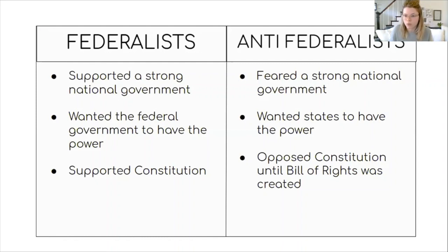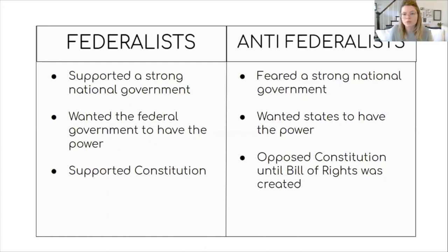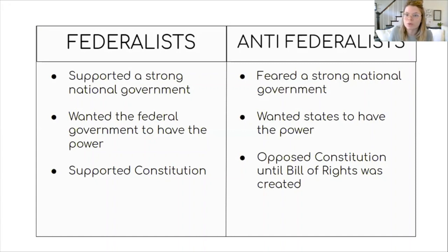We'll get to the Bill of Rights more at another time, but basically it's a list of things that you have as an American citizen that really can't be taken away from you — some freedoms and things like that. Adding that to the constitution did help some anti-federalists feel more comfortable, and led to the overall ratification, because they felt that as long as those freedoms were promised, maybe the federal government wouldn't get too powerful — which was their fear in the first place. Go ahead and take a minute to fill out your chart.